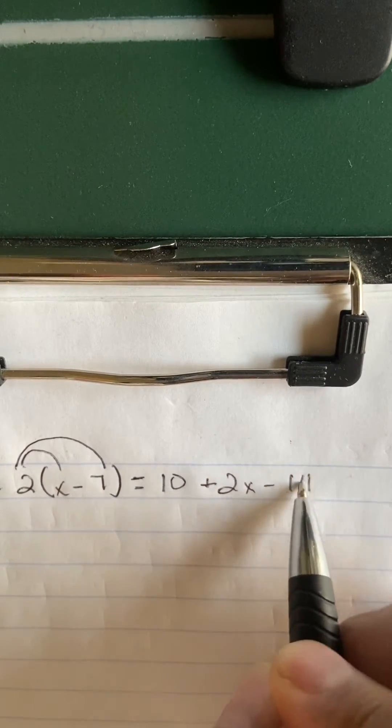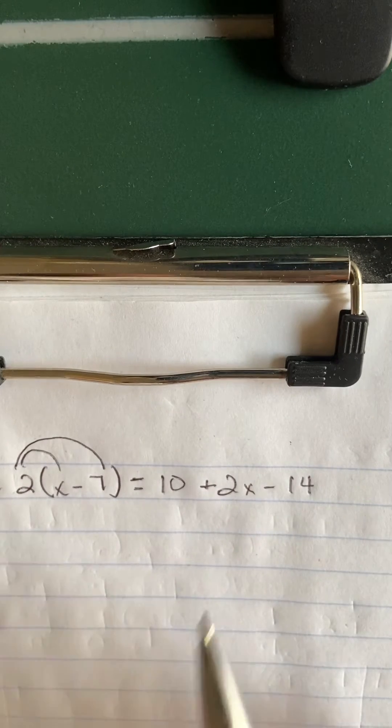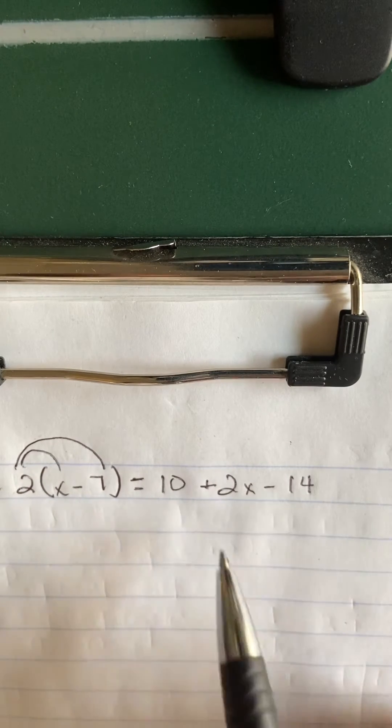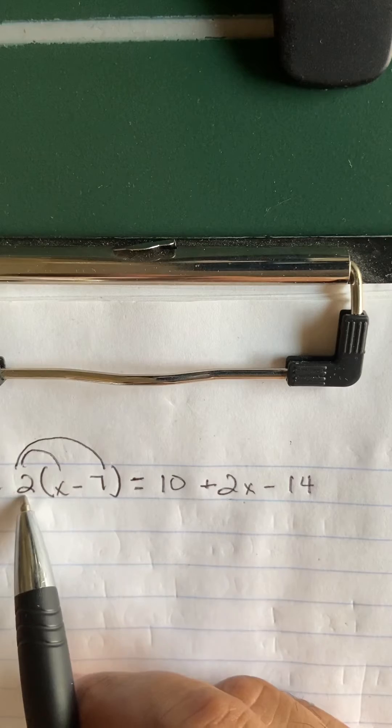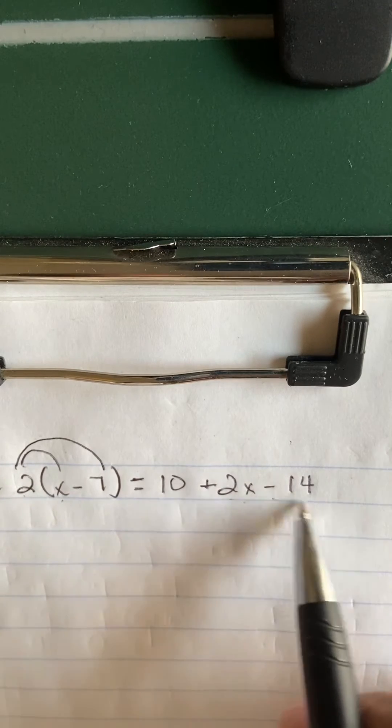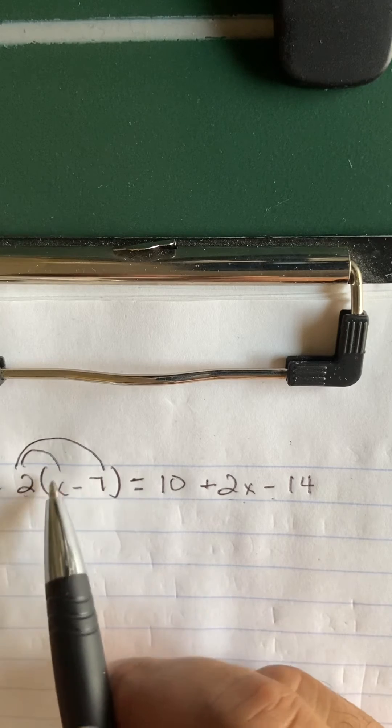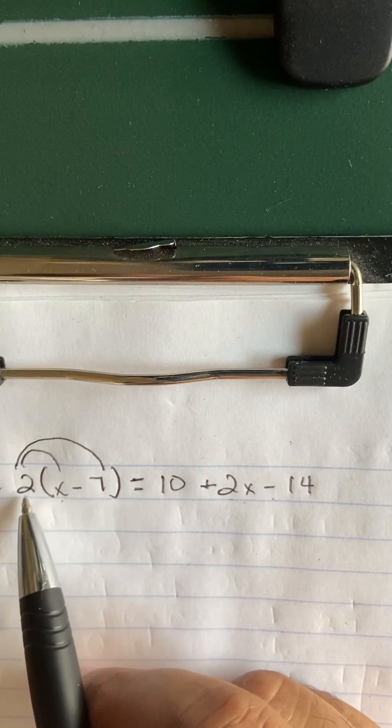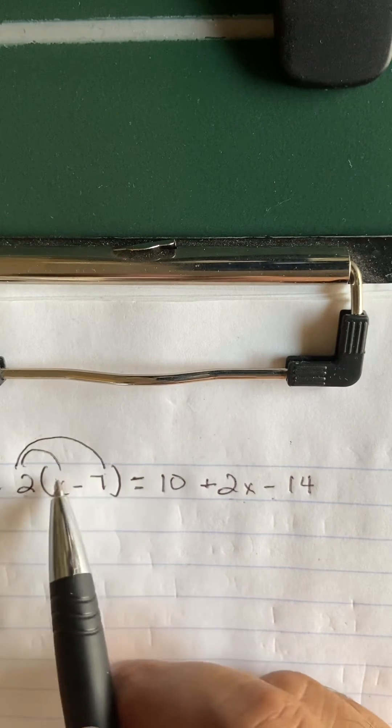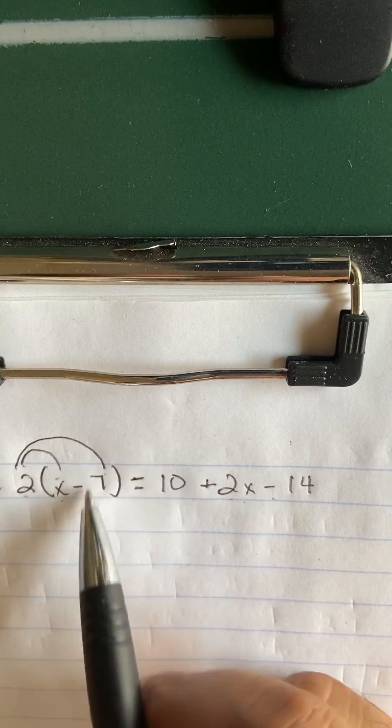...and minus 14. Now, always make sure you know where everything comes from. Where did this 2x come from? Doing 2 times x. Where did this minus 14 come from? Doing 2 times negative 7. This 2, because it's next to the parentheses, gets multiplied by everything inside the parentheses. A lot of people forget to multiply by...